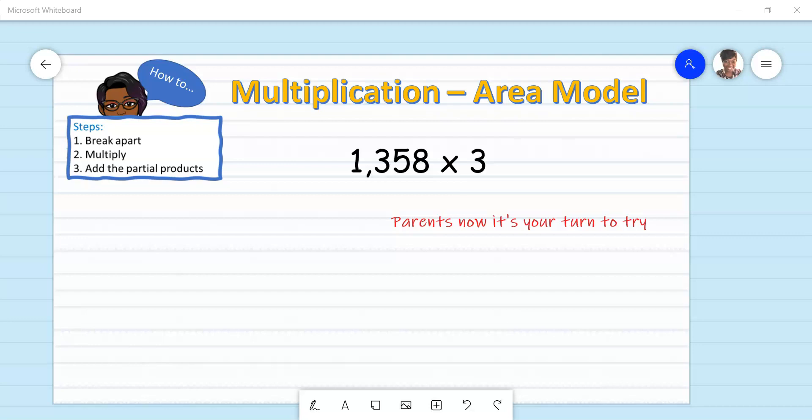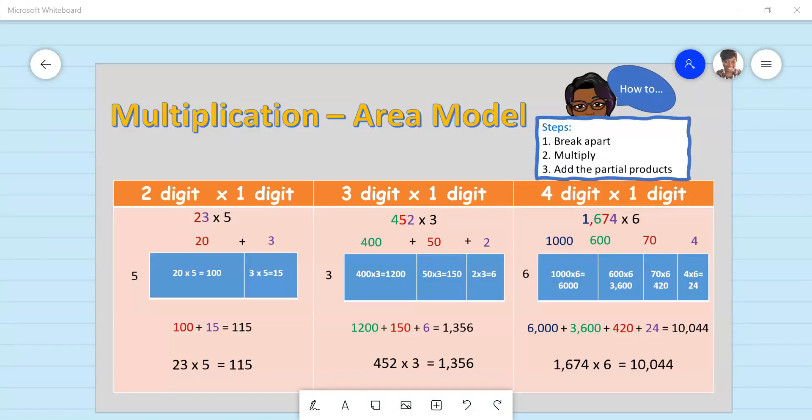I have for you a review sheet, or what teachers like to call an anchor chart. Here we have examples of just how to multiply using the area model. And if you take a look, we have an example of multiplying a four-digit number by a one-digit number. So parents, why not give it a try? And make sure to comment down below letting me know how it worked out for you.